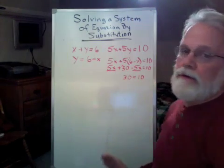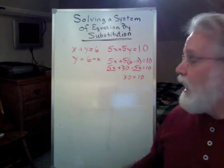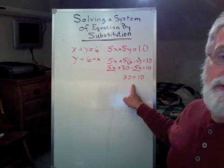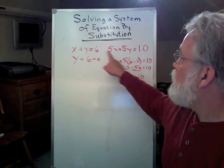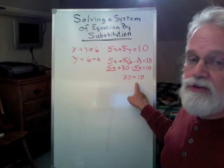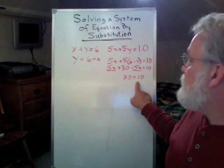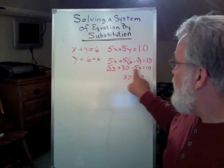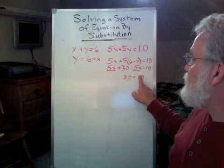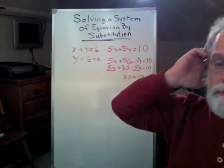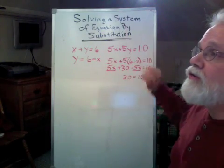Hold on a minute. I know that's not true. I don't actually have to work this out all the way to the end to discover that I have a problem here. These guys just canceled. I'm stuck with 30 equals 10, and that just isn't true. So what does this mean? This means that there's no solution.